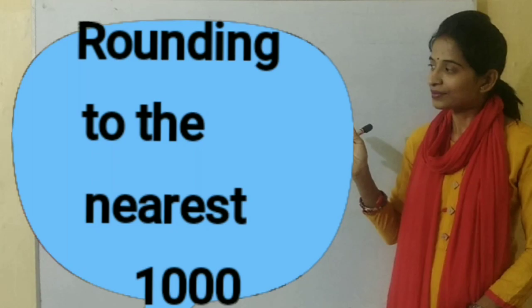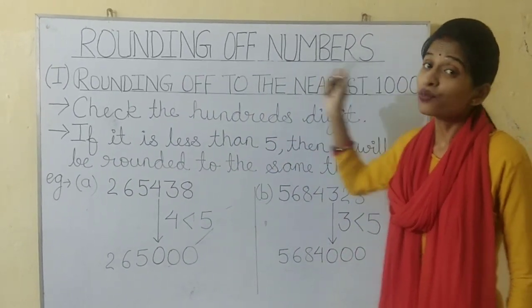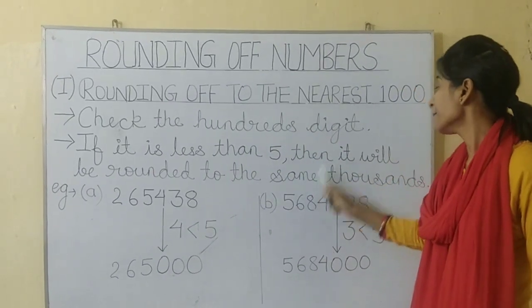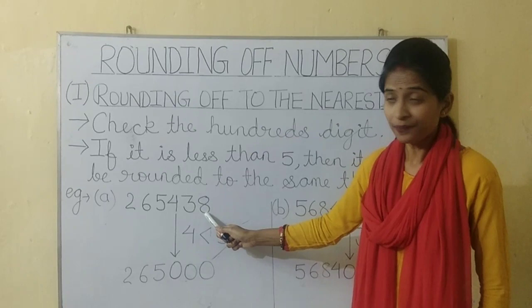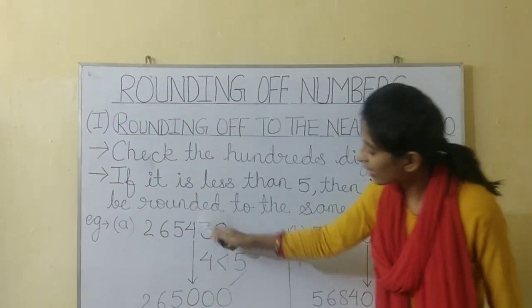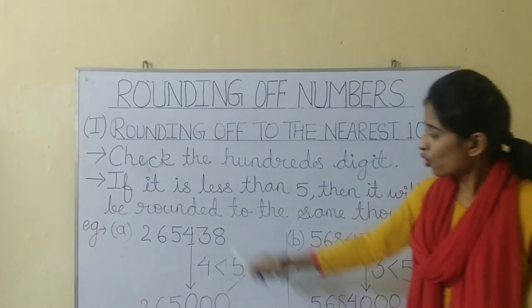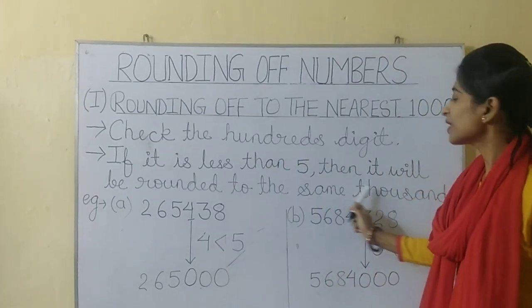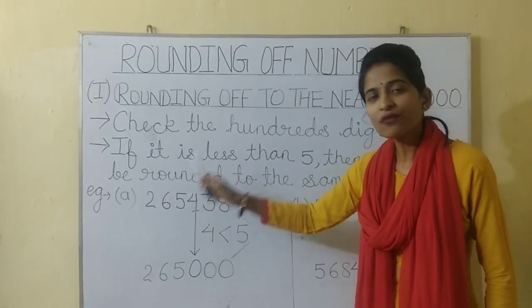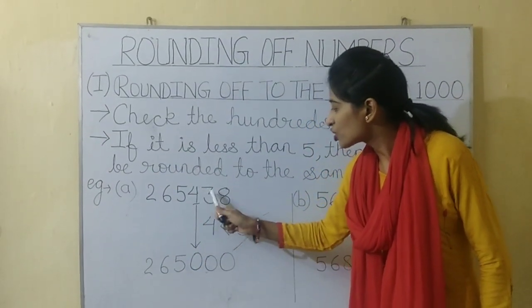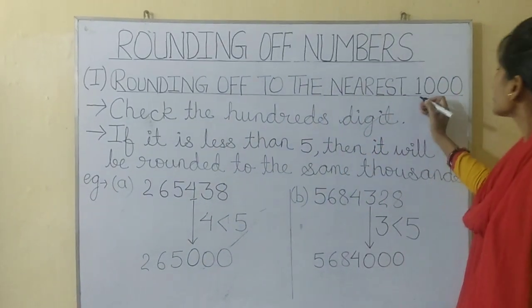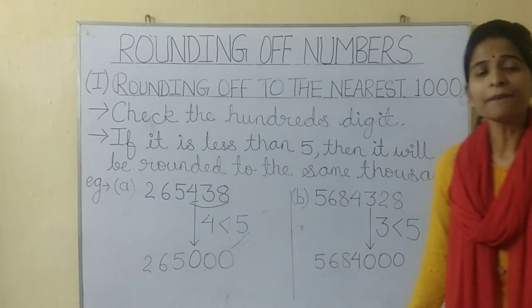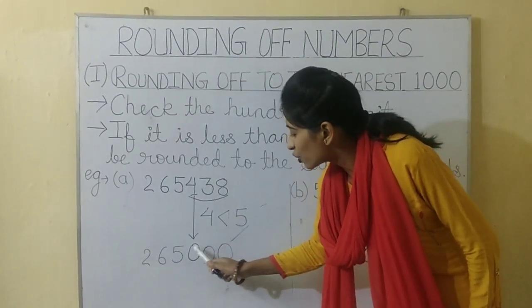Rounding to the nearest thousand. For rounding off to the nearest thousand, we will check the hundreds digit. If it is less than 5, then it will be rounded to the same thousand. Look at this example. The hundreds digit is 4, and 4 is less than 5, so the thousands digit will remain the same — there is 5000, so it will remain 5000. In thousands there are three zeros, so the last three digits will become 0. The answer is 265000.